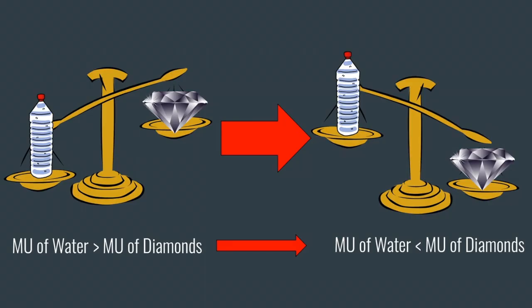Because you haven't received any diamonds on this trip, the marginal utility of diamonds will remain constant. Once the marginal utility of water falls below the marginal utility of diamonds, you should start requesting diamonds instead. Choosing diamonds over water at this point will allow you to not only make it out of the desert safely, but also give you diamonds along the way. After you start receiving diamonds, you will also see a diminishing marginal utility for them, as you saw with water.